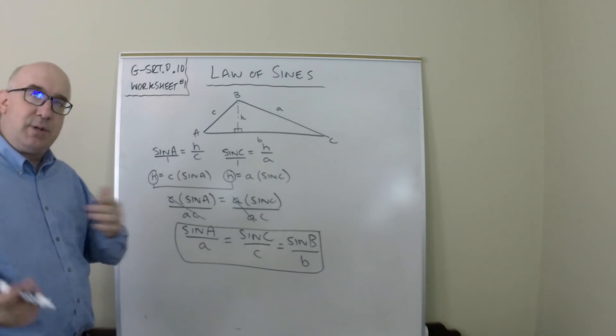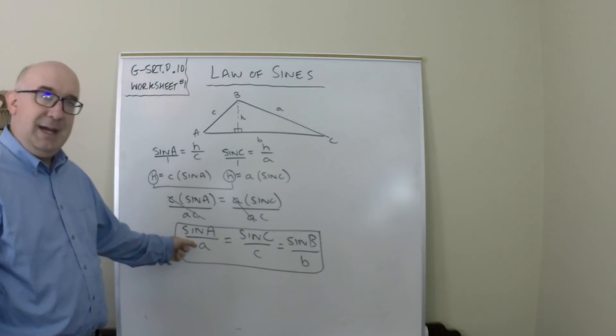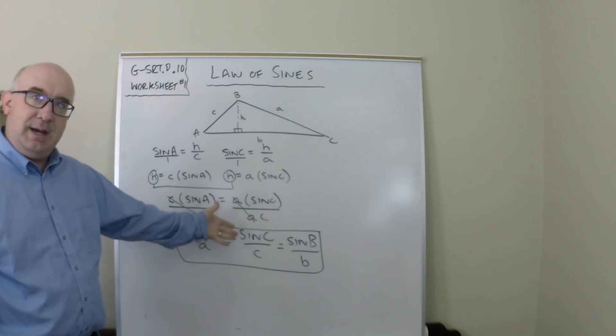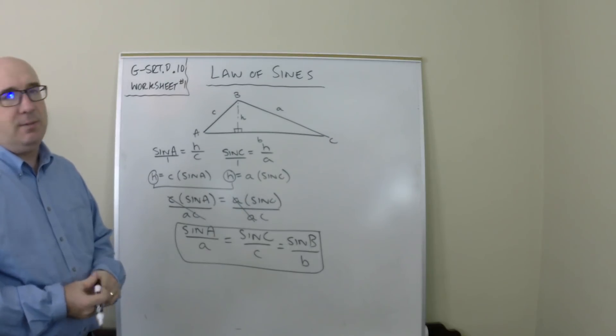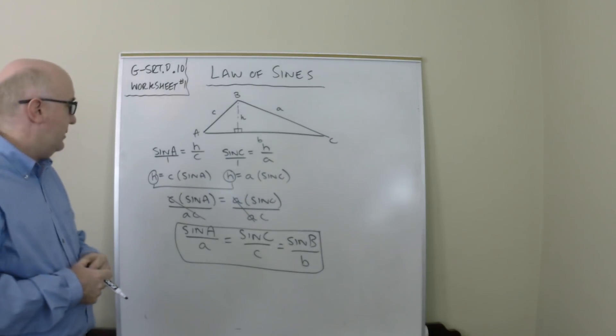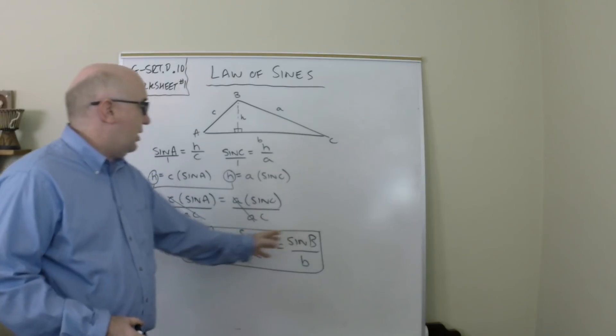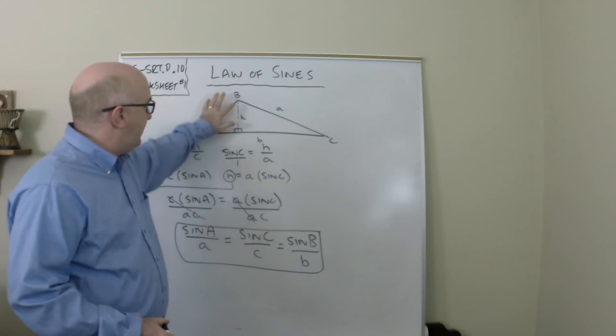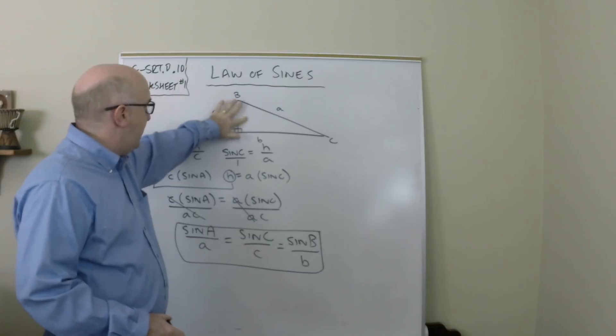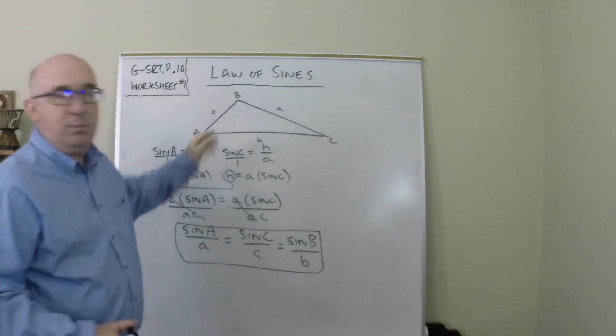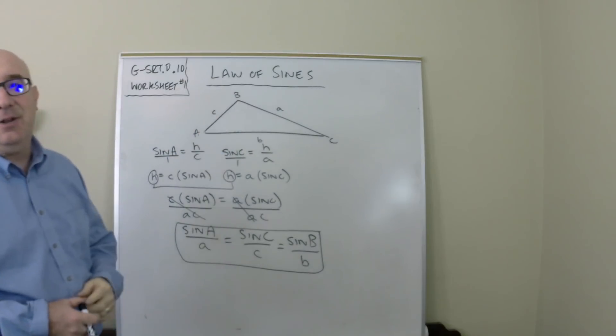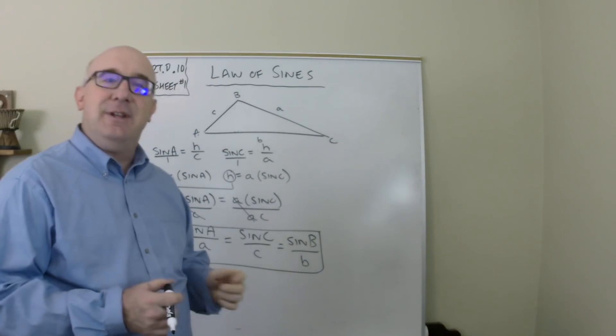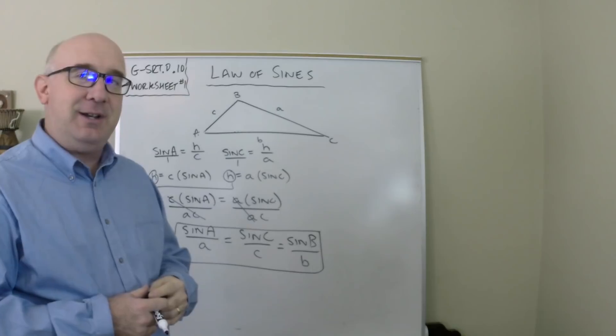Now some textbooks, some teachers have the lengths a, b, c on the top and the angle relationships on the bottom. It doesn't matter. So this is called the law of sines. Now the powerful thing about this is we just derived this from this triangle right here. And notice it's oblique, and so we can find sides and angles of a triangle even if it is not a right triangle.